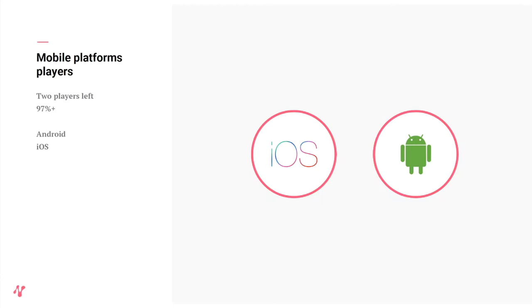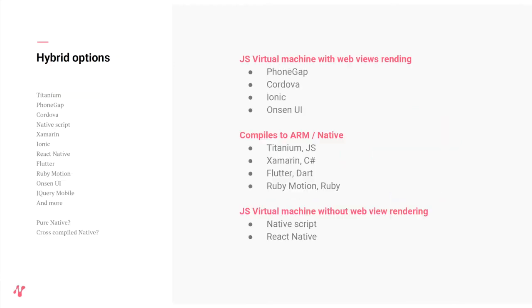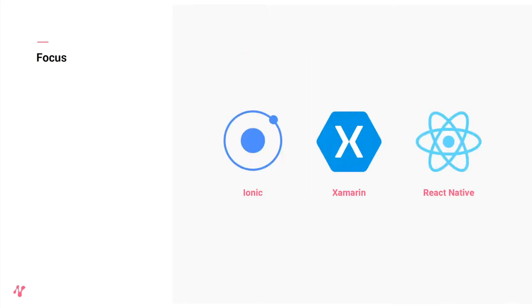There are a lot of hybrid options at the moment. Some are JavaScript virtual machines running in a view rendering layer. Some compile into native ARM code. Some run as virtual machines like React Native. For this talk, we're going to focus on the three big ones: Ionic, Xamarin, and React Native.